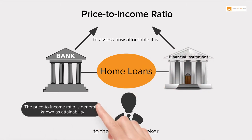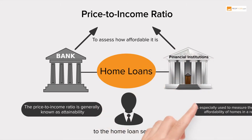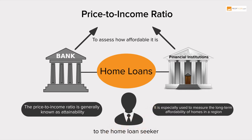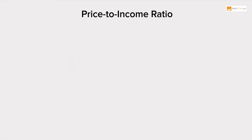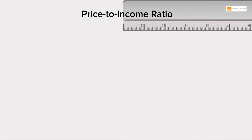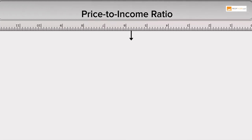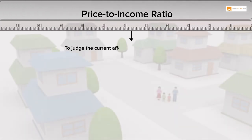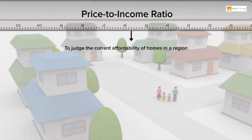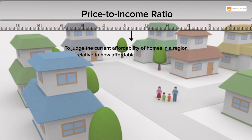The price to income ratio is generally known as attainability. It is especially used to measure the long term affordability of homes in a region. It is also a good parameter to judge the current affordability of homes in a region relative to how affordable it historically was.